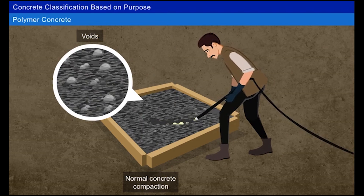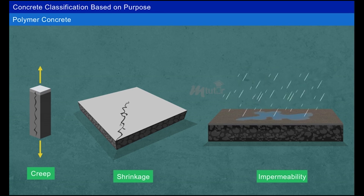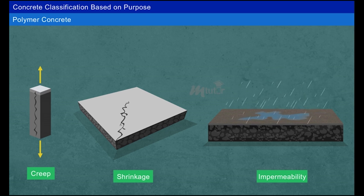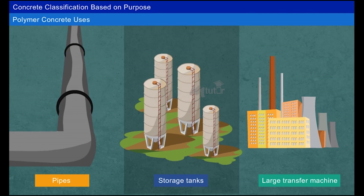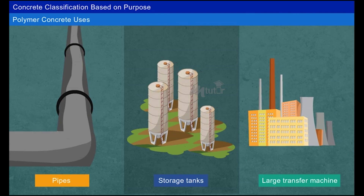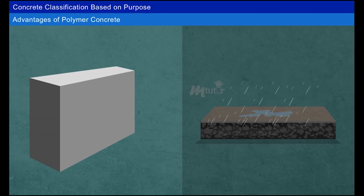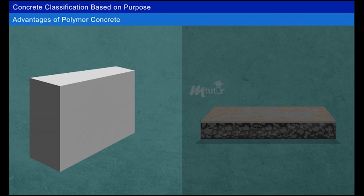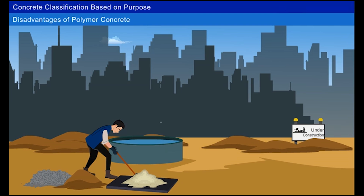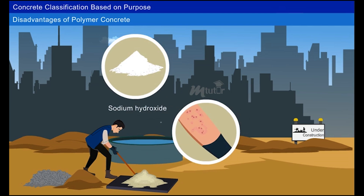To avoid the problem of voids, polymer concrete is used as it reduces the inherent porosity of the concrete by improving its strength and other properties. Pipes, storage tanks, and large transformer frames are built with this type of concrete. Advantages: better compressive strength, low permeability, and fire resistance. Disadvantages: it contains sodium hydroxide, which can be harmful to humans.